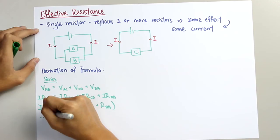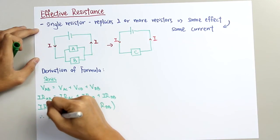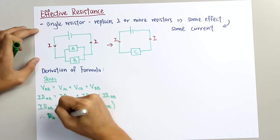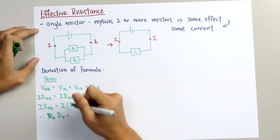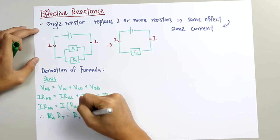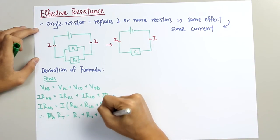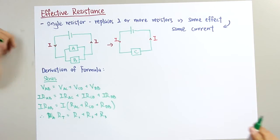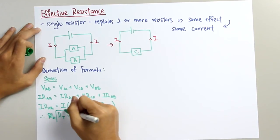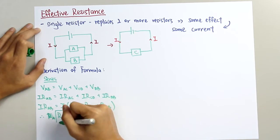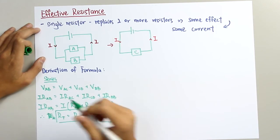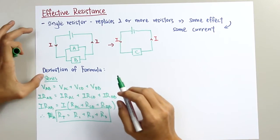Therefore, we can give a conclusion: R total equals to R1 plus R2 plus R3 and so on. So this will be the formula to calculate the effective resistance in series.